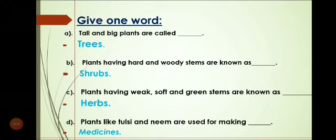Number D: Plants like Tulsi and Neem are used for making Medicines — M-E-D-I-C-I-N-E-S, Medicines.